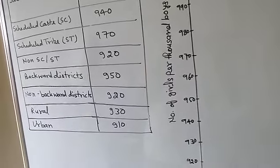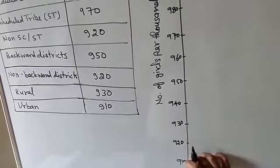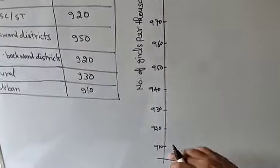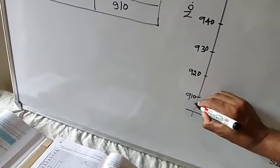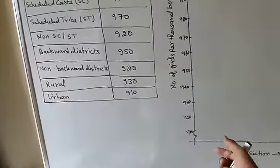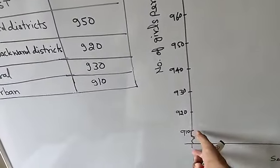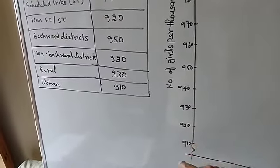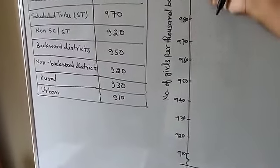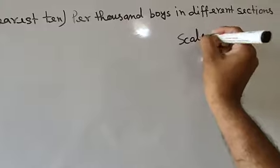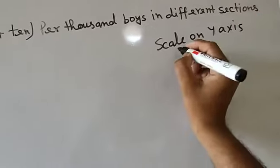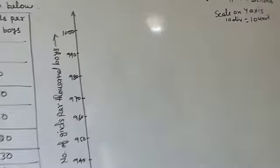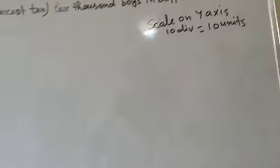The gap between each value is 10, but between 0 and 910 there is a gap of 910. To indicate that interval you need to make a special symbol called the kink. The kink shows that values from 0 to 910 exist in that compressed space. The scale on the y-axis is: 10 divisions equal to 10 units.